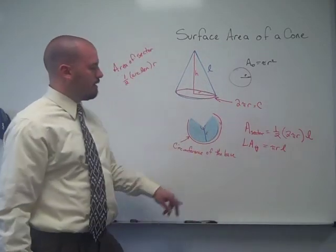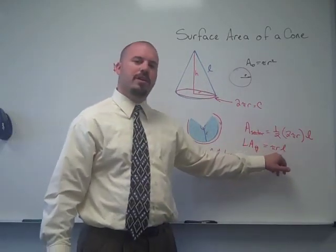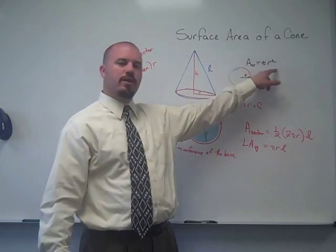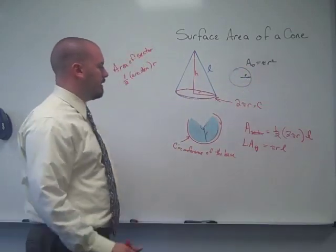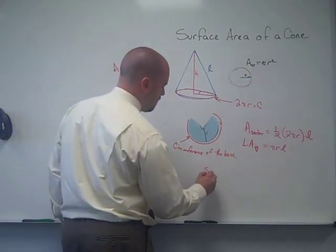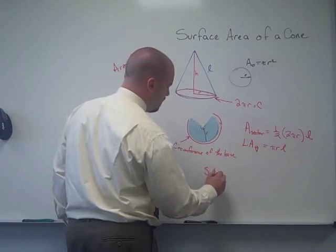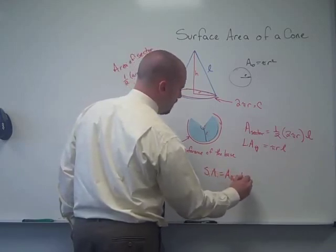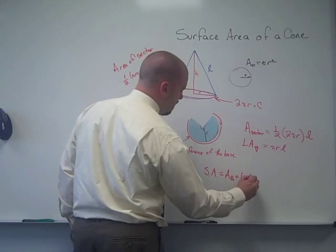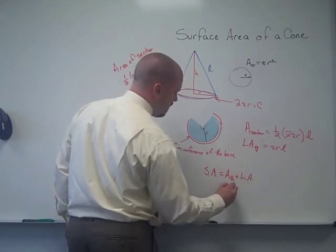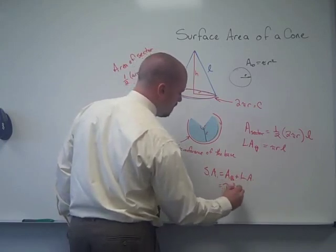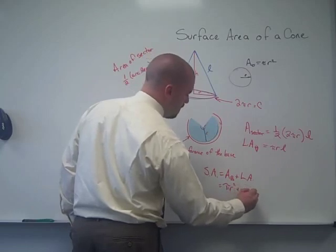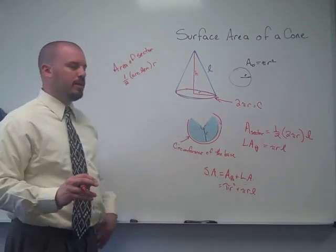So the lateral area of the cone is pi times R times L. The area of the circular base is pi R squared. Therefore, the total surface area of the cone is the area of the base plus the lateral area, which equals pi R squared plus pi R L. And that is how you find the surface area of a cone.